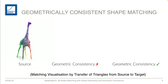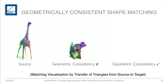To illustrate the importance of geometric consistency, we don't only want to transfer color from the source to the target shape, but also the triangulation. This means we apply the triangulation from the source shape with the computed matching to the target shape. For a geometrically inconsistent matching, the triangulation might be arbitrarily bad and quite distorted, and we can no longer make out the target shape. But whenever we have a geometrically consistent matching, the triangulation is much smoother.